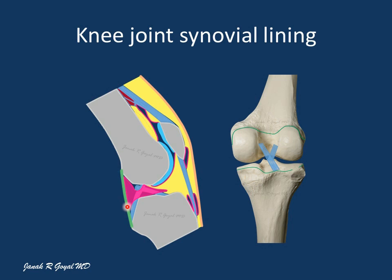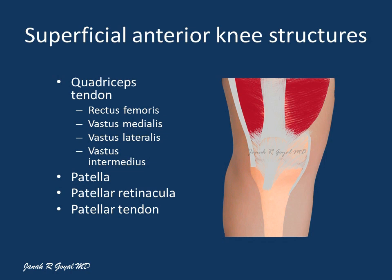Anteriorly, the superficial structures of the knee include the quadriceps tendon, patella, patellar tendon, and medial and lateral retinacula. The quadriceps tendon is a three-layered structure: the superficial layer formed by rectus femoris, the middle layer formed by vastus medialis and vastus lateralis, and the deep layer formed by vastus intermedius.